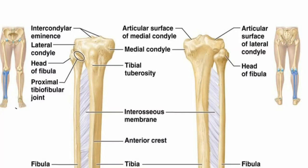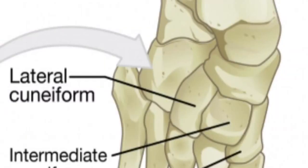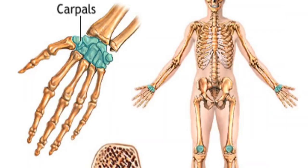Short bones are cube-shaped, located in wrist and ankle joints. They provide stability and some movement. The carpal bones in the wrist are: scaphoid, lunate, triquetral, hamate, pisiform, capitate, trapezoid, and trapezium.